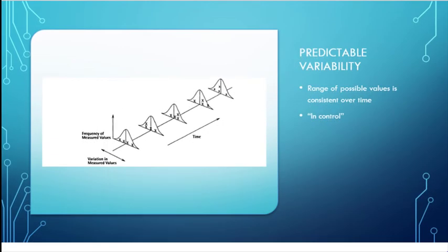This chart is showing a process where variability is predictable. Each group of things we look at over time has the same range of possible values. It isn't that every time we measure we get the exact same thing — it's that every time we measure, we know the range in which the value is going to be. A process where variability is predictable is called an in-control process.